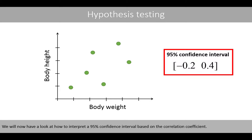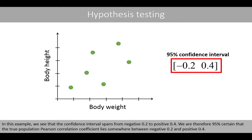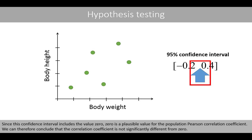We will now have a look at how to interpret the 95% confidence interval based on the correlation coefficient. In this example, we see that the confidence interval spans from negative 0.2 to positive 0.4. We are therefore 95% certain that the true population Pearson correlation coefficient lies somewhere between negative 0.2 and positive 0.4. Since this confidence interval includes the value 0, zero is a possible value for the population Pearson correlation coefficient, and we can conclude that the correlation coefficient is not significantly different from 0.